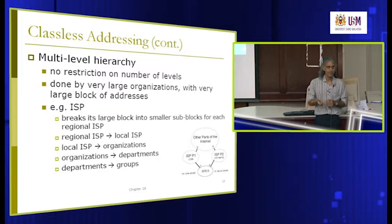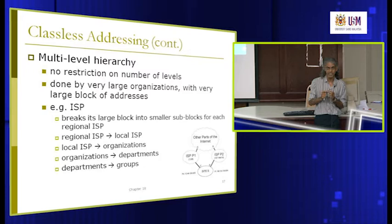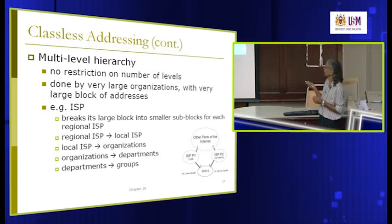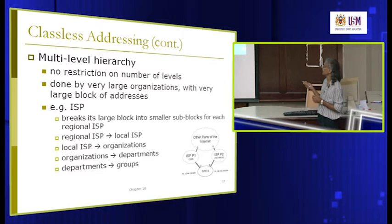This level of subnetting can go multiple levels — we call this a multi-level hierarchy for subnetting. You can go many levels as long as you have enough bits to manipulate. For example, USM has a class B address, slash 16, meaning the first 16 bits belong to USM. The remaining 16 bits can be further divided.